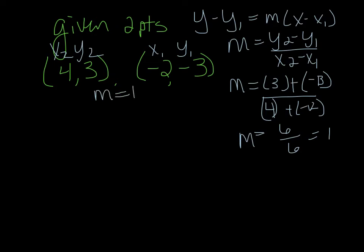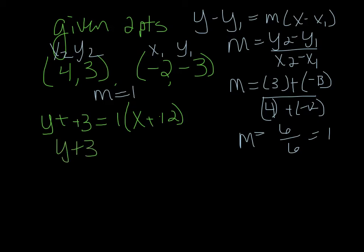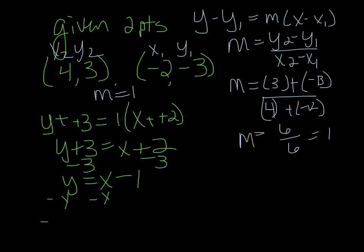Now I want to plug everything back into the formula. Your first y is left alone. y minus y sub 1 — my y sub 1 is negative 3. Equals my slope is 1, x, and my x sub 1 is negative 2. So I have y plus 3. Since the slope is 1, nothing happens when I distribute — I just drop the parentheses and get x plus 2. Now I want it in standard form: move the 3 under the 2, and move x in front of y. Subtract 3 and get y equals x minus 1. Move x over — negative x plus y equals negative 1. That's the answer in standard form.